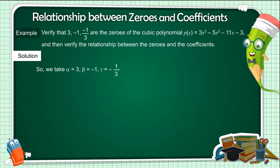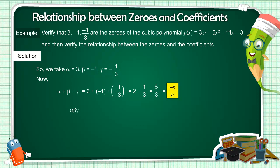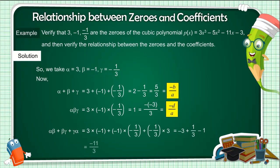So we take alpha equals 3, beta equals minus 1, gamma equals minus 1/3. Now, alpha plus beta plus gamma equals minus b by a; alpha·beta·gamma equals minus d by a; and the product alpha·beta plus beta·gamma plus gamma·alpha equals c by a. This verifies all three relationships between the zeros and the coefficients.